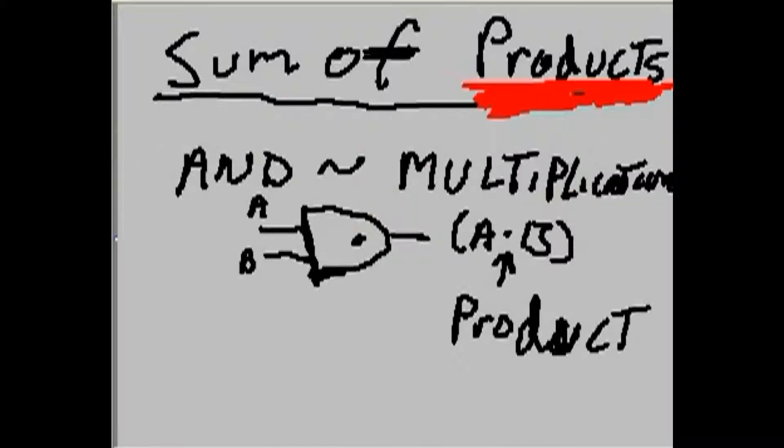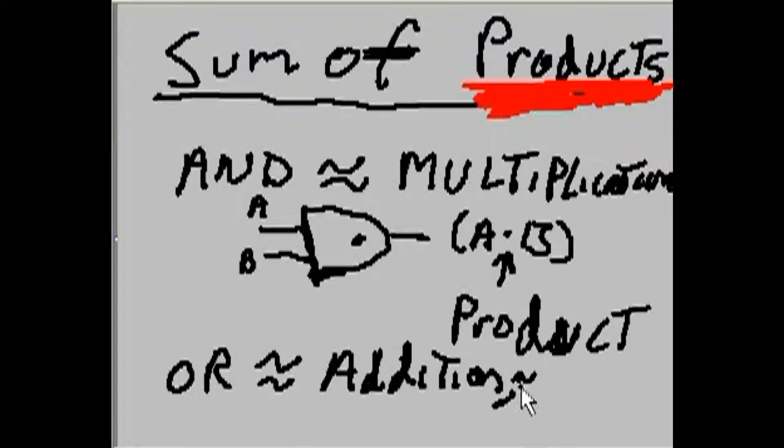Now, what about the other guy? The sum business. Well, the OR gate approximates addition, comma, summing things up.